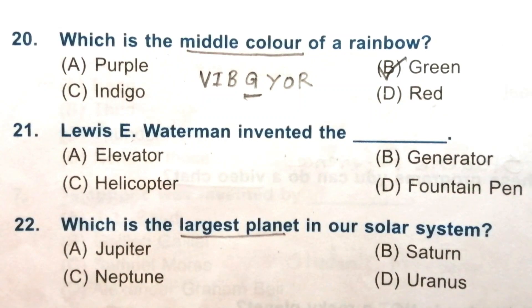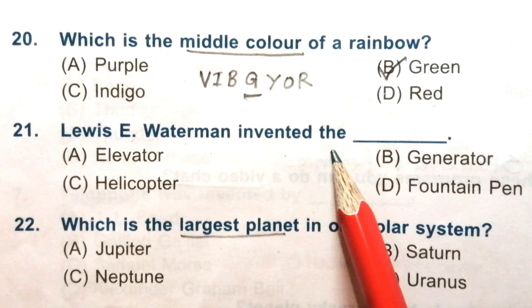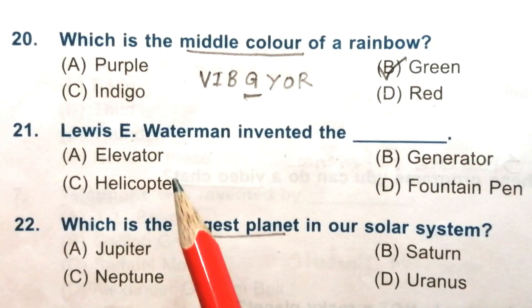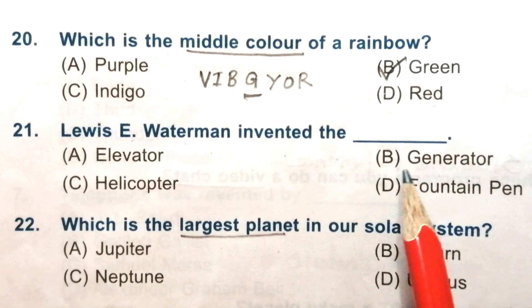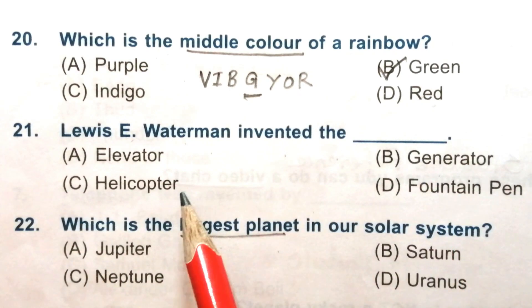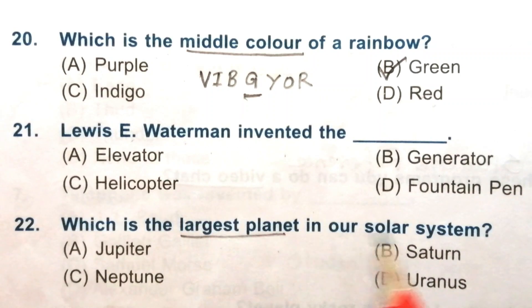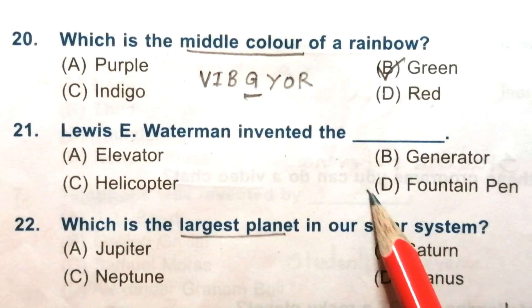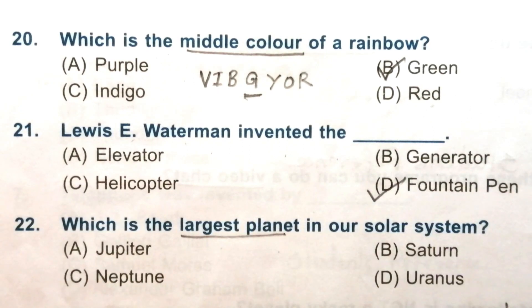Question 21: Lewis E. Waterman invented the — elevator, generator, helicopter, or fountain pen. The answer is D, fountain pen.